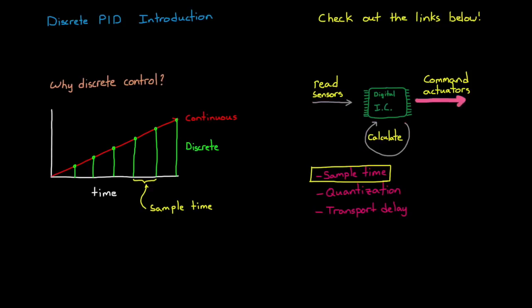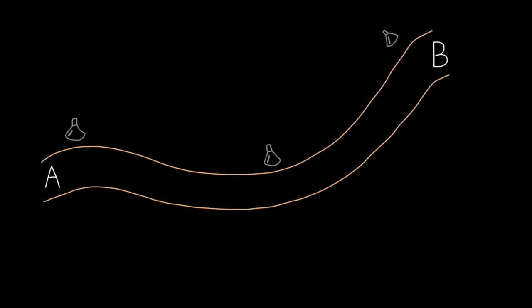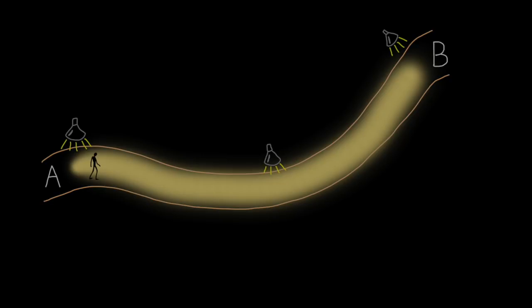If the sample time is short enough compared to the dynamics of your system, then it behaves very similarly to the continuous system, because the controller can read sensors and update actuators so fast that it appears practically continuous. To understand why this matters, consider this analogy: you want to walk from point A to point B through a winding hallway. If the lights are on and your eyes are open, that's analogous to the continuous time domain — you can see everything as it happens, constantly adjust your path, and could probably even run through the hallway. Now, if we swap the continuous light for a strobe light and it's very fast — so fast it looks like the lights are just on — the situation looks the same and you can still run through the hallway.